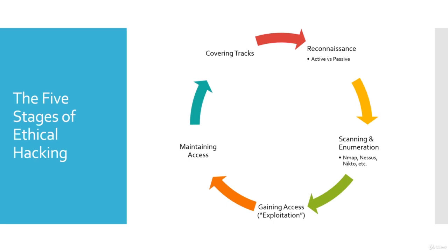Once we do our information gathering and scanning enumeration, we move into the gaining access portion, also known as exploitation. We run an exploit against the client, against the vulnerable service, or whatever it may be, to try to gain access into a machine, a network, an environment, and so on.